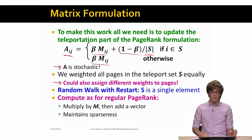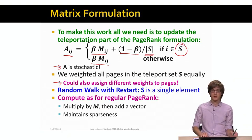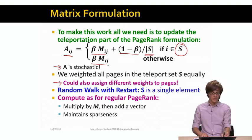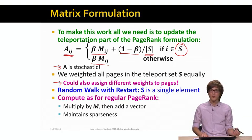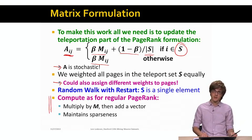For now, all we need to understand for personalized PageRank or topic-specific PageRank is that we have this topic-specific set of pages S. This topic-specific set of pages we somehow decide. We then compute the new version of matrix A where the random walk can only teleport to the entries of S. The same machinery we have developed so far applies in the case of topic-specific PageRank.